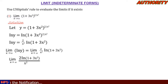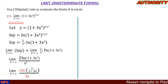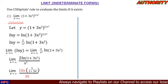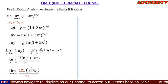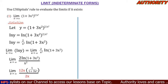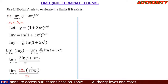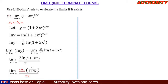Now let's differentiate the numerator and denominator separately using L'Hôpital's rule. When we differentiate the numerator, we get 2 times (1 / (1 + 3x²)) times the derivative of the inside — use a substitution method to differentiate this. The denominator differentiates to 2x. So we have the limit as x approaches infinity of 12x · (1 / (1 + 3x²)) all over 2x.